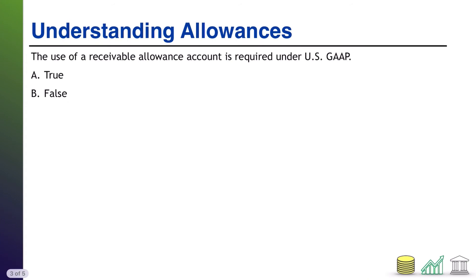Next up, a true or false: the use of a receivable allowance account is required under US GAAP. Is this true or false? Take a moment, think about it. Welcome back — yes, it is true. US GAAP requires companies to use what is known as the allowance method of accounting, and under the allowance method, you do establish that allowance for doubtful accounts.